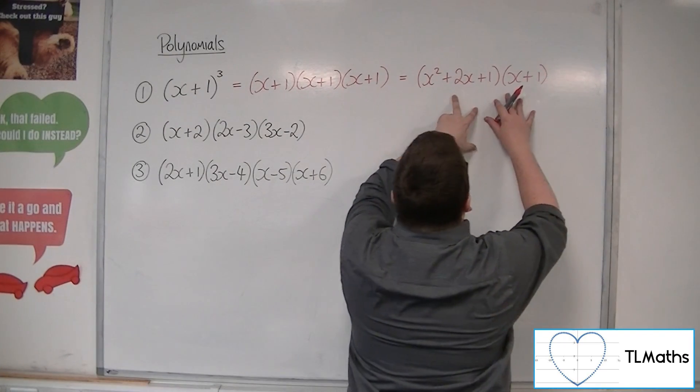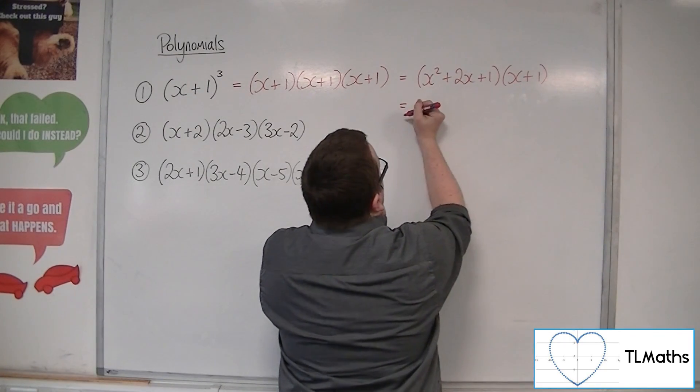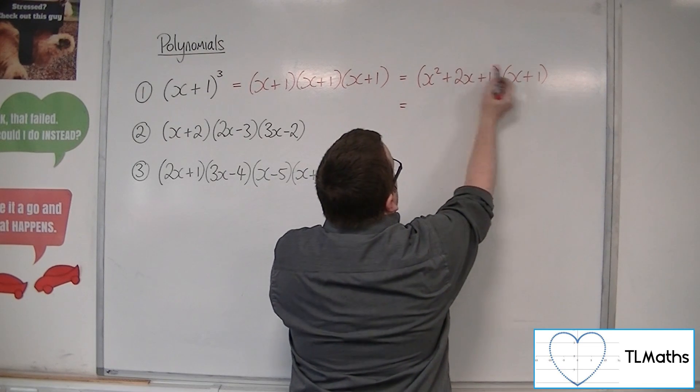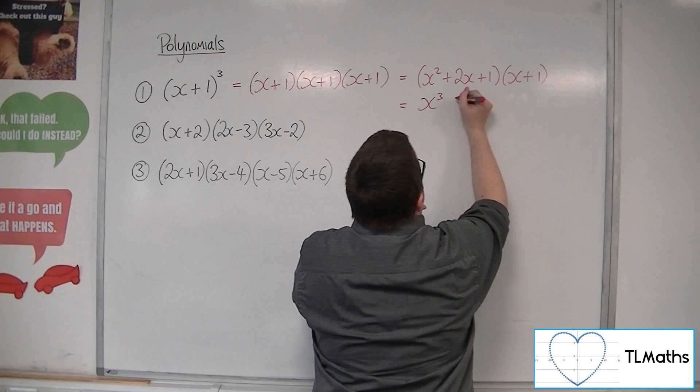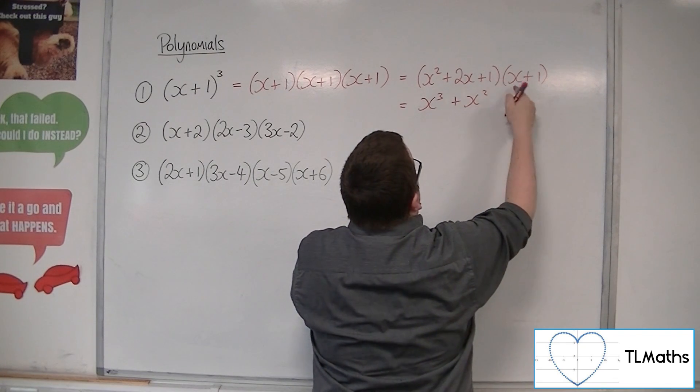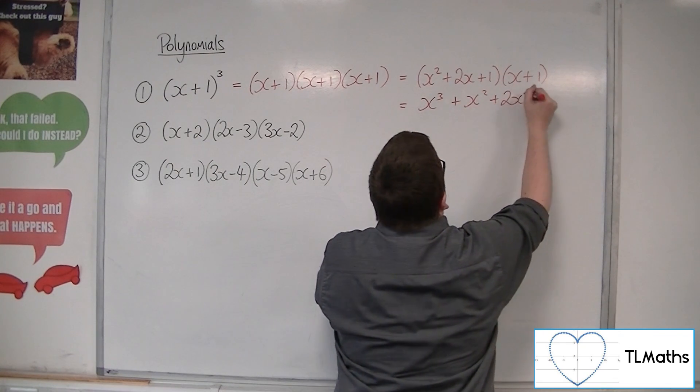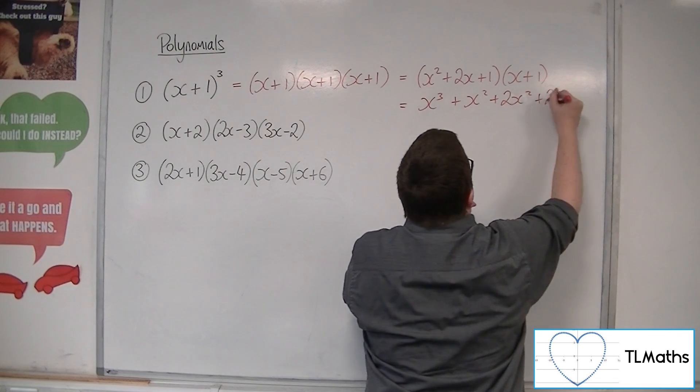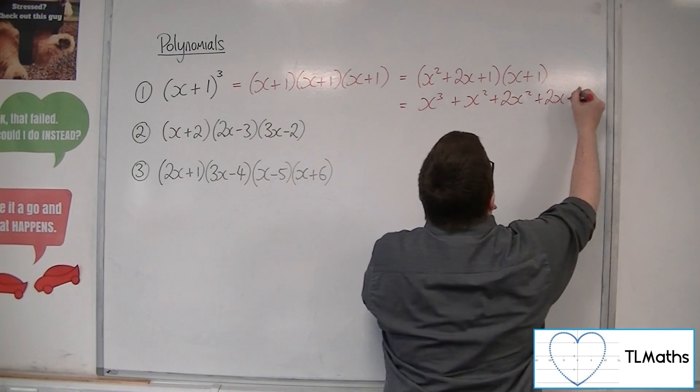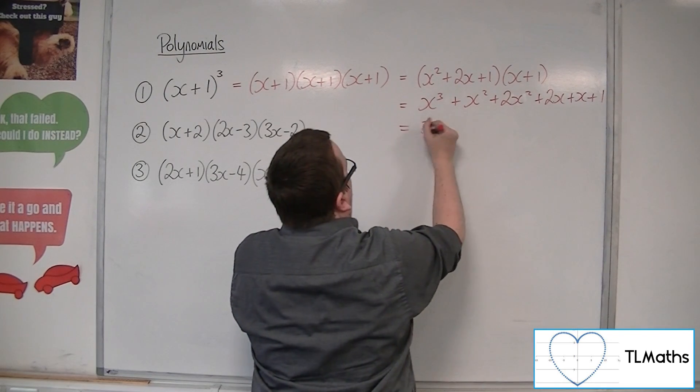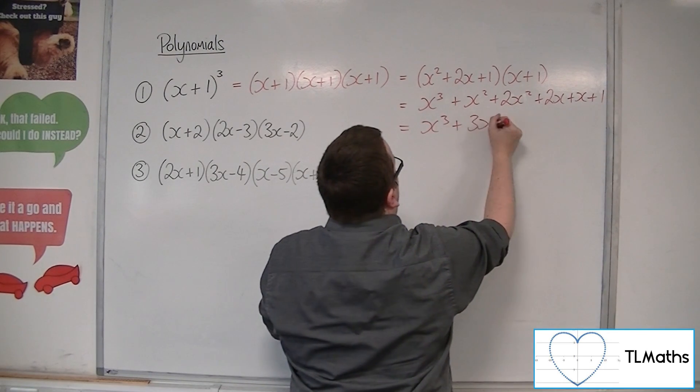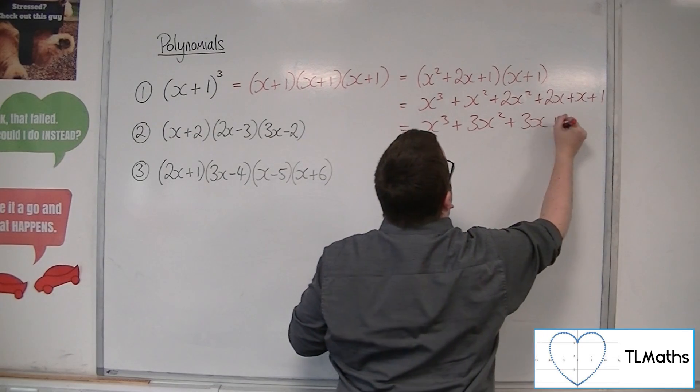You can multiply this out using a grid if you prefer. I'm going to go straight out and go x² times x, so x³, x² times 1, 2x times x, so 2x², 2x times 1, 1 times x, and 1 times 1. So we get x³ + 3x² + 3x + 1.